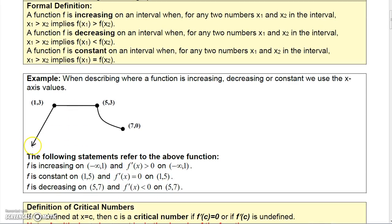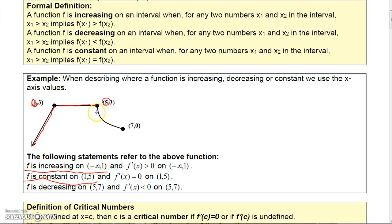If you look at this piece, as x gets larger, the graph gets higher and higher. So this part of the graph would be increasing — f is increasing on that interval, negative infinity to 1. But when you go from here to here, the graph is actually staying constant. So when you go from x equals 1 to x equals 5, the graph is constant on 1 to 5. And then the graph is decreasing on this piece, which goes from 5 to 7.